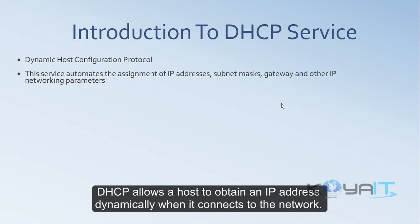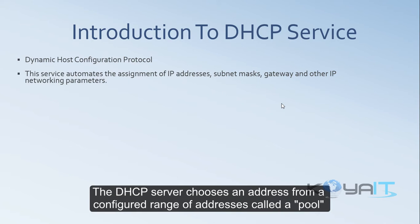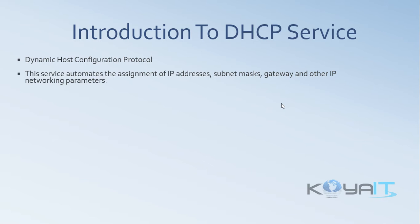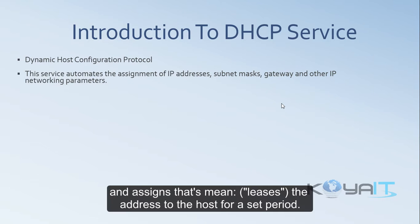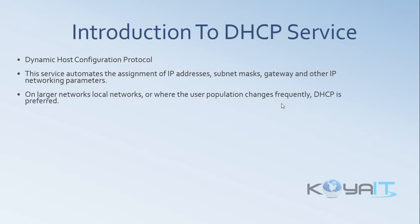The DHCP server chooses an address from a configured range of addresses called a pool and leases that address to the host for a set period. On larger networks or local networks where the user population changes frequently, DHCP is preferred.